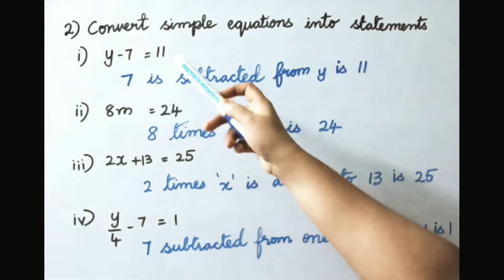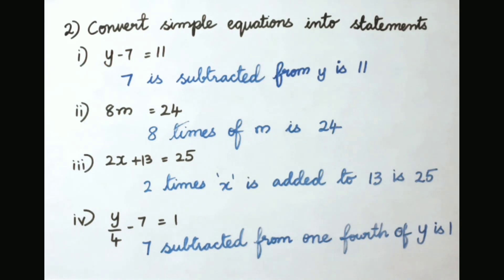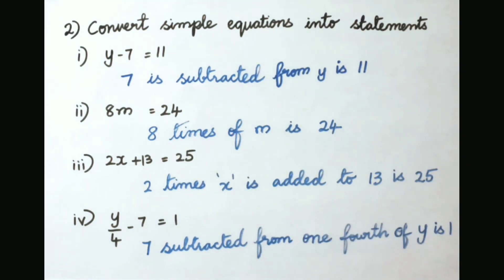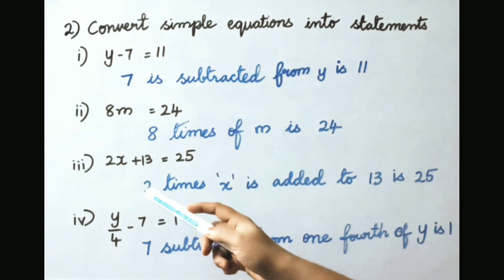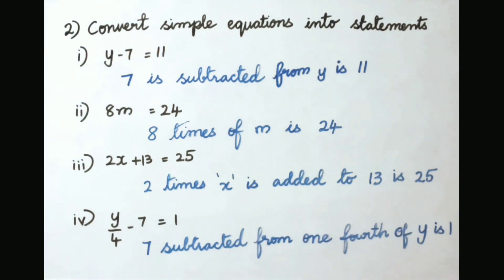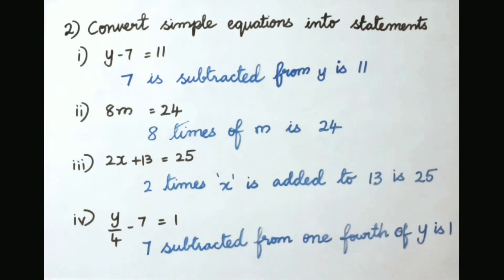Question 2: convert simple equations into statements. First, y minus 7 equals 11 — statement: 7 is subtracted from y is 11. Second, 8m equals 24 — 8 times of m is 24. Third, 2x plus 13 equals 25 — 2 times x added to 13 is 25. Fourth, y by 4 minus 7 equals 1 — 7 subtracted from one fourth of y is 1.